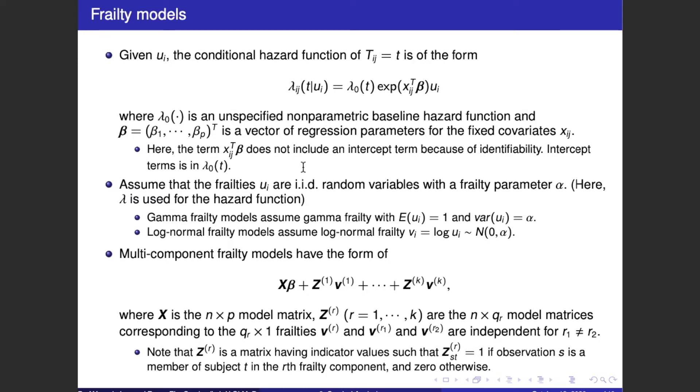Assume that the frailties u_i are IID random variables with a frailty parameter alpha. Gamma frailty models assume gamma frailty with expectation E(u_i) equals 1 and variance Var(u_i) equals alpha. Log-normal frailty models assume log-normal frailty v_i, where log(u_i) follows the normal distribution with mean 0 and variance alpha.